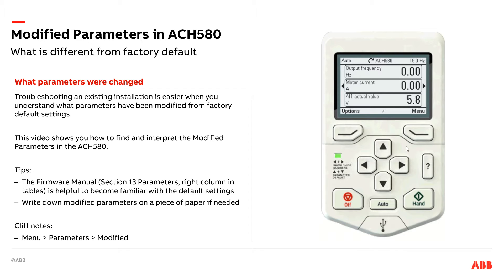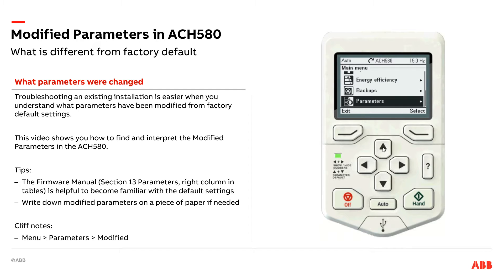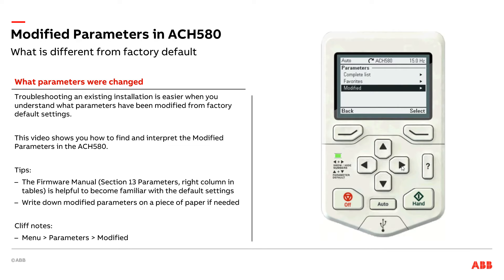I'm going to come up here to menu. I can either scroll down, but there's a shortcut trick where if I hit the up button, it'll take me straight to parameters. Or I could have scrolled down to parameters, hit the right arrow, and I've got my complete list of parameters. If I had created a favorite list or my modified list of parameters, I'll come down to modified, hit the right arrow, or I could hit select. And right now I have details on everything in this drive that has been changed from the factory default settings.